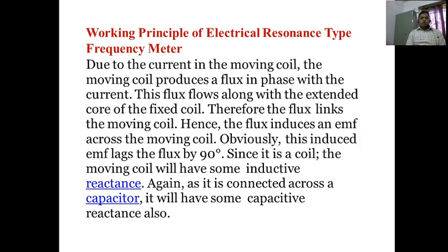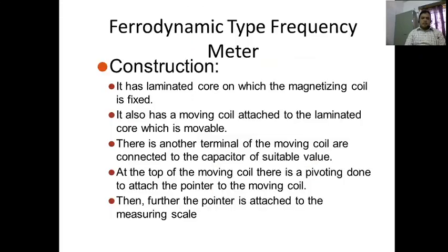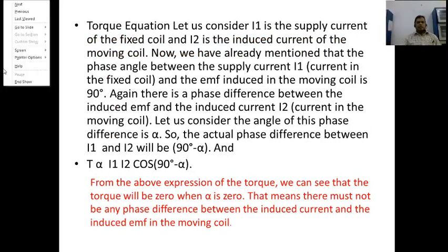Since it is a coil, the moving coil has inductive reactance, and connected across a capacitor it will also have capacitive reactance. The circuit has both inductive and capacitive reactances. For the torque equation, I1 is the supply current of the fixed coil and I2 is the induced current of the moving coil. The phase angle between supply current I1 and the EMF induced in the moving coil is 90 degrees. There is also a phase difference between the induced EMF and the induced current I2; let the angle of this phase difference be alpha.